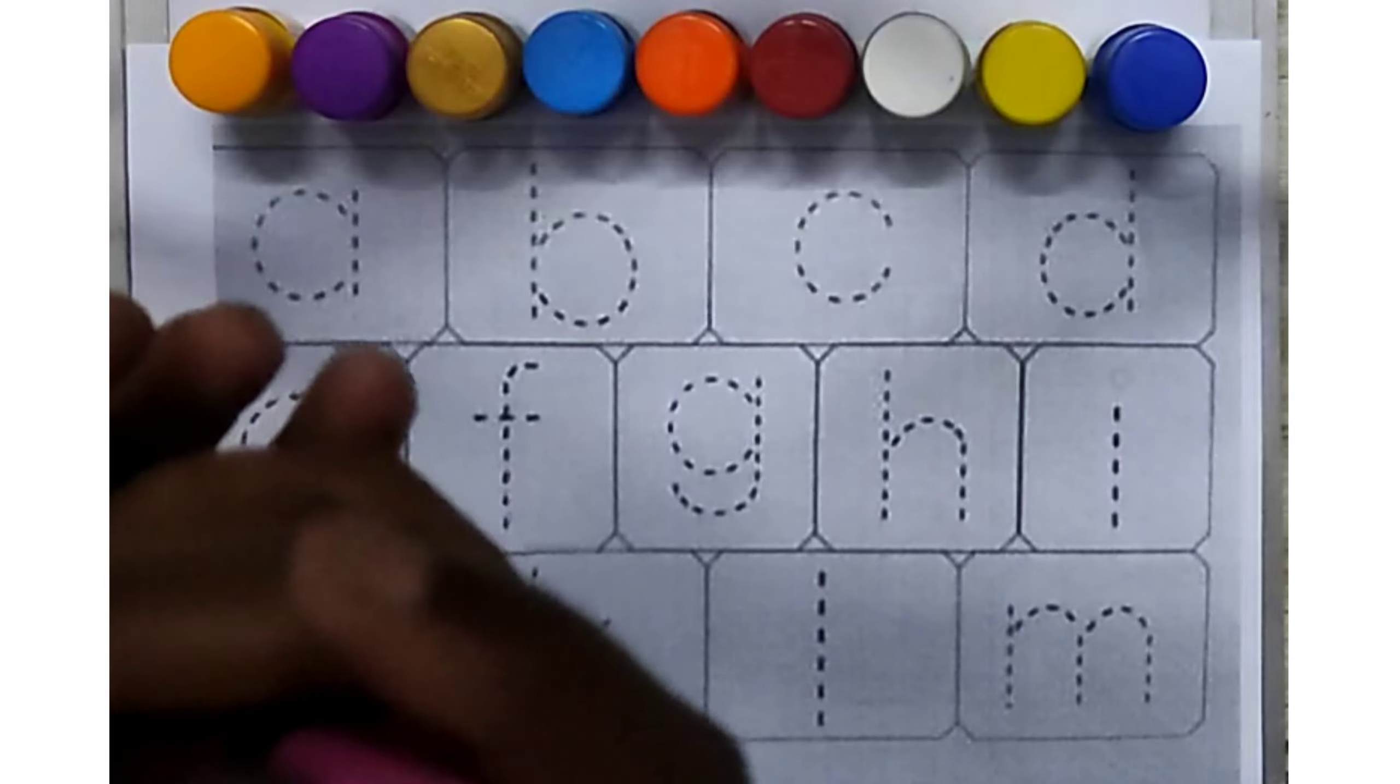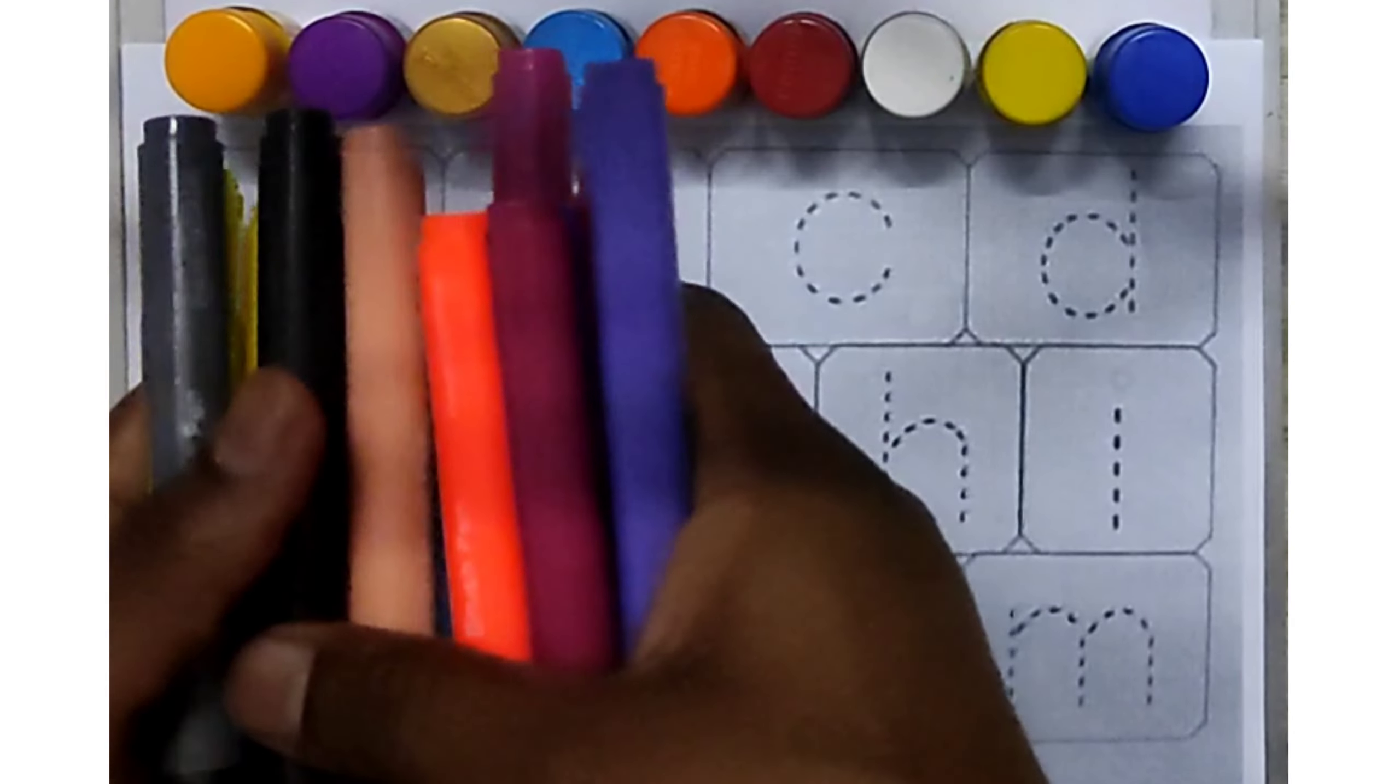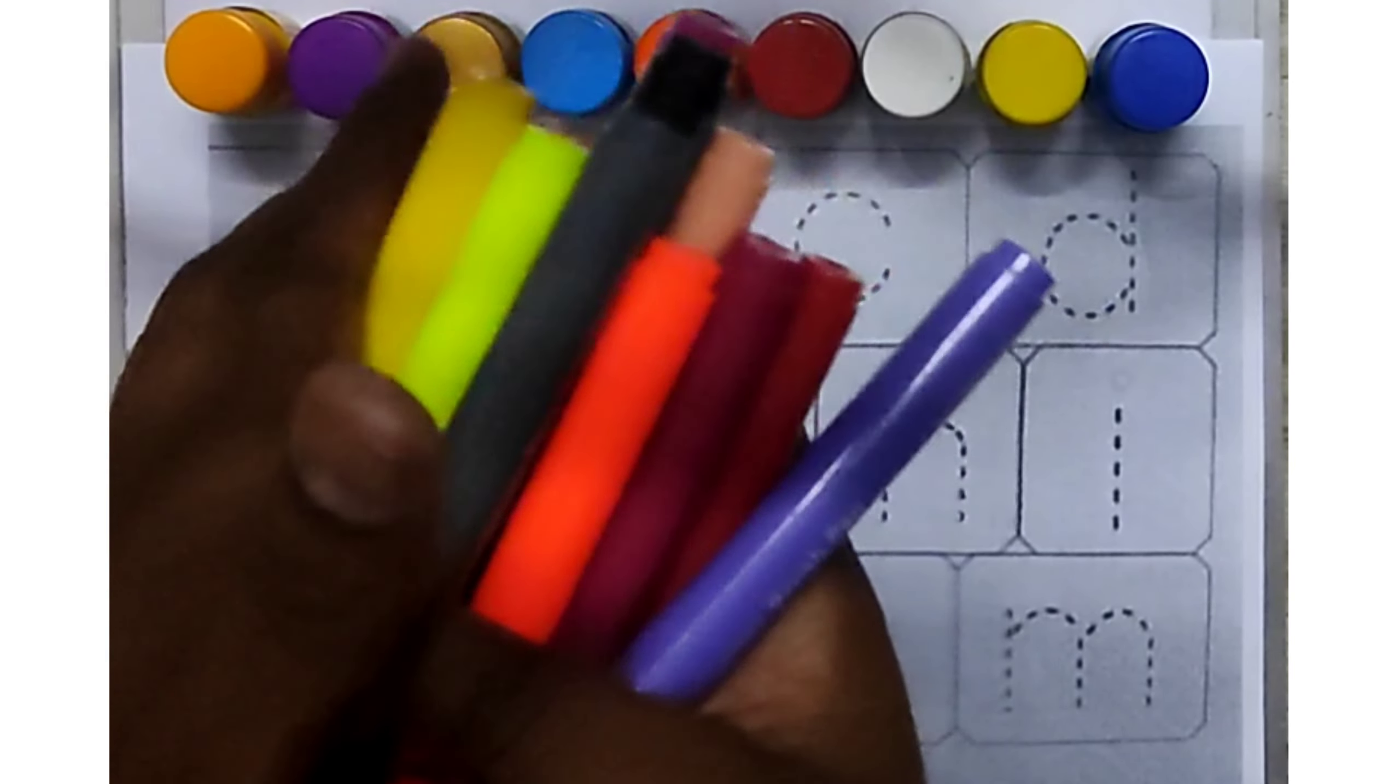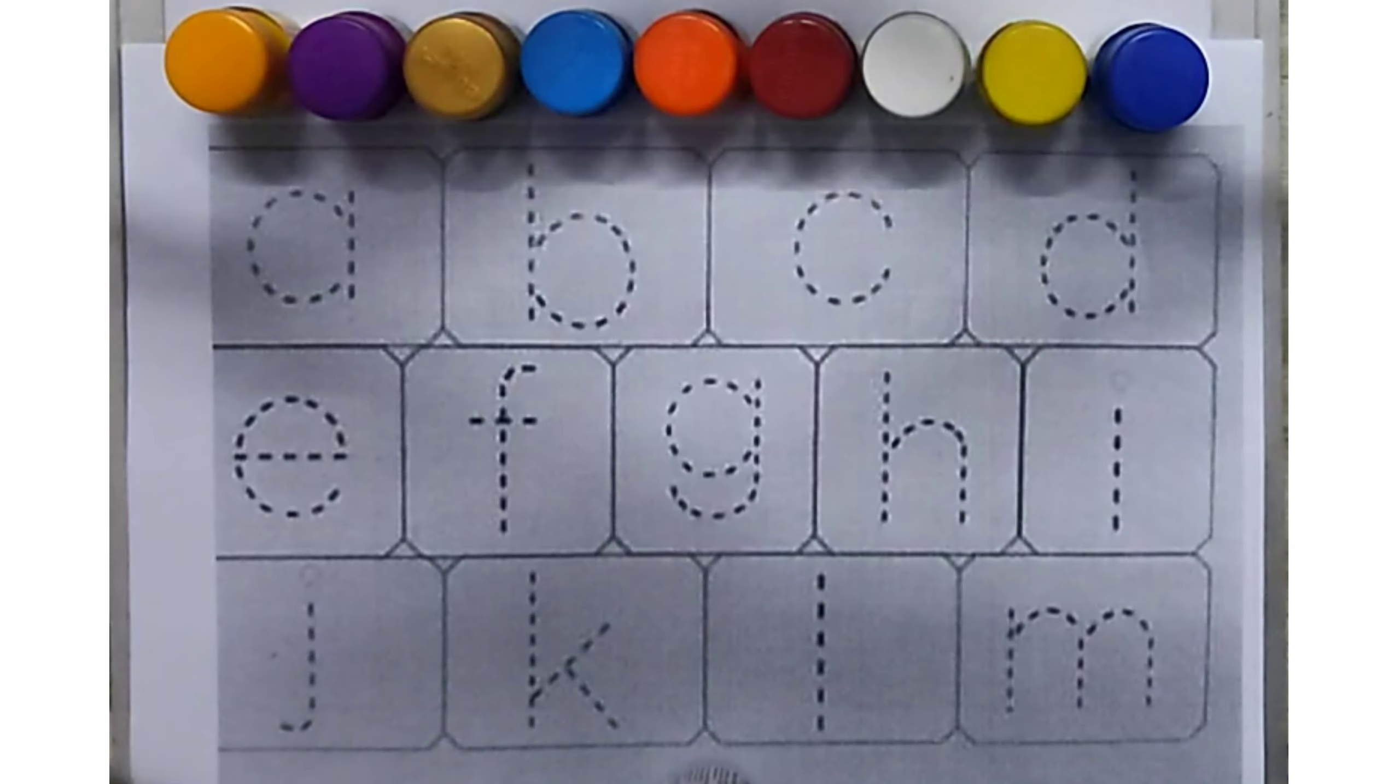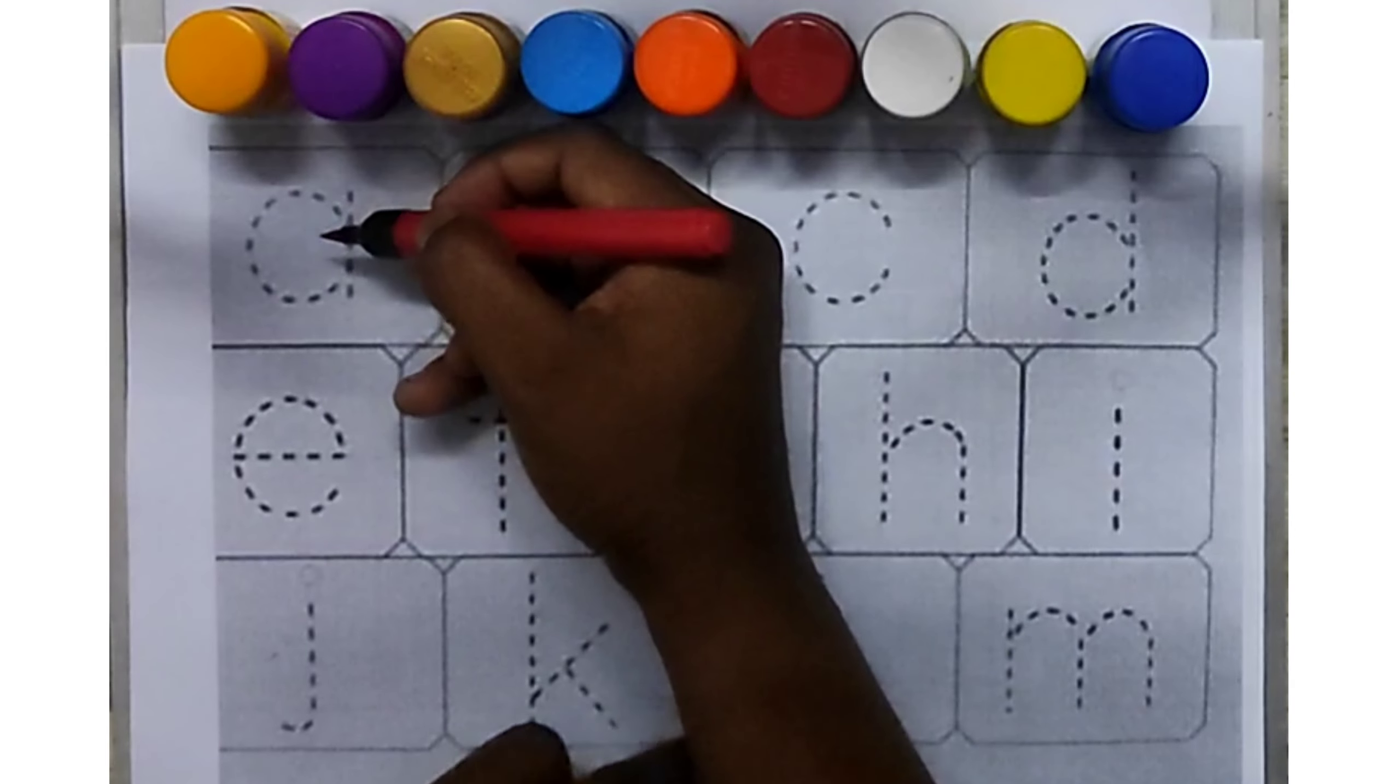There are more colored pencils. Draw A, B, C, D. The first is red color. A, A for apple.